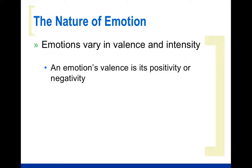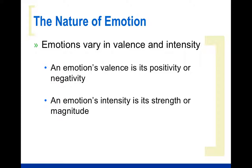Emotions vary in their valence and intensity. Valence refers to how positive or negative an emotion is — you can look at it on a spectrum with positive on one end and negative on the other, and emotions constantly go back and forth. Intensity refers to how strong the emotion is. You can be kind of scared of something, or so fearful you literally can't move. You can be kind of sad or extremely sad. Emotions exist on a spectrum of both positive and negative, and some are really strong and overwhelming while others are weak and manageable.